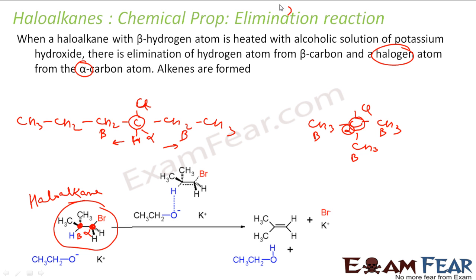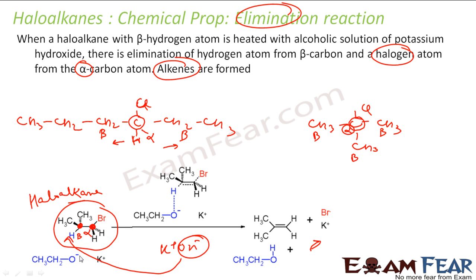In this elimination reaction you get alkenes — alkenes are formed. I can use potassium hydroxide (K⁺OH⁻) here. OH⁻ is a very strong base. It will attack this hydrogen on the beta carbon, take out that hydrogen, and it will be an E2 reaction. In the same step, Br⁻ will leave as the leaving group and a double bond will form. That is the beta elimination reaction — the alpha halogen and beta hydrogen are removed.